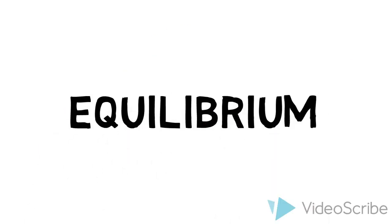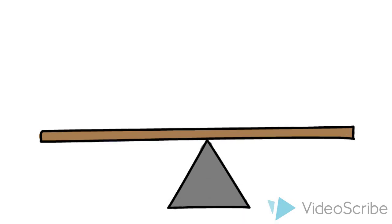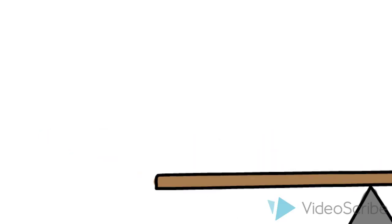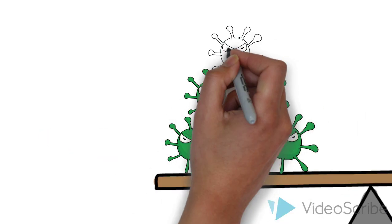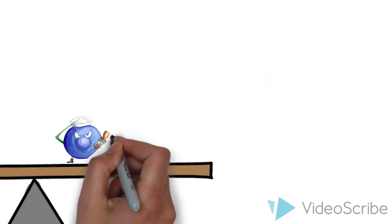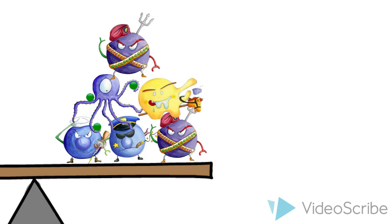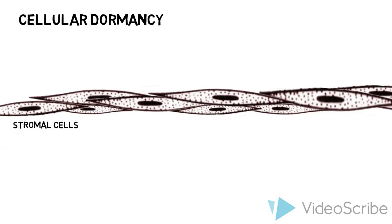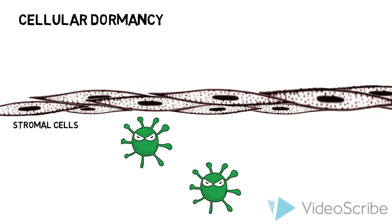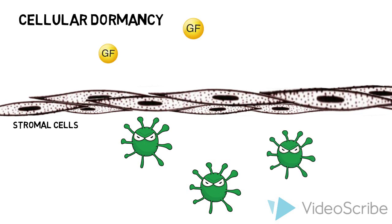In the Equilibrium phase, when tumor cell growth equals the rate at which the immune system removes tumor cells, equilibrium is achieved. The tumor is kept dormant through three possible mechanisms. Firstly, cellular dormancy: stromal cells surround tumor cells to create an environment that doesn't promote tumor cell growth, so growth factors are unable to interact with tumor cells, causing cell cycle arrest.